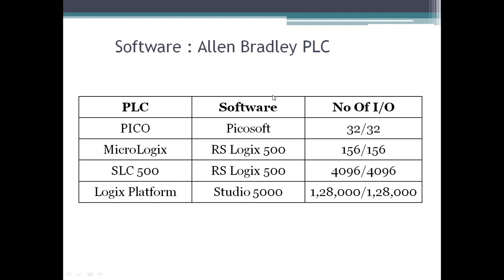These are all the software names, and depending on the software and the type, the number of IOs will vary. For PICO, the number of IOs will be 32 inputs and 32 outputs — it may go up to 156 and like that, it will vary. If we are adding some expansion modules, you can increase the number of IOs.